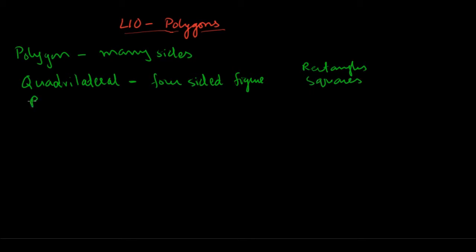Then you have pentagons, which have five sides. Hexagons have six sides. Heptagons have seven sides. And octagons have eight sides. That's all you need to know for the GRE.